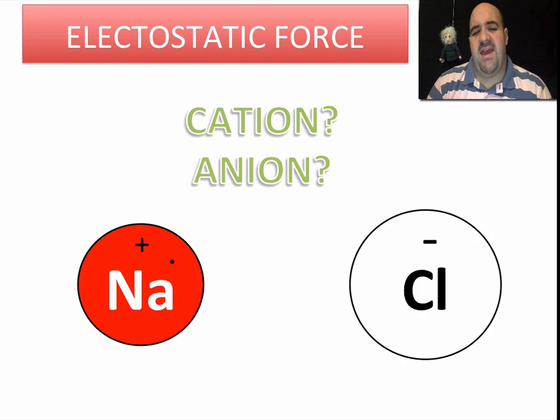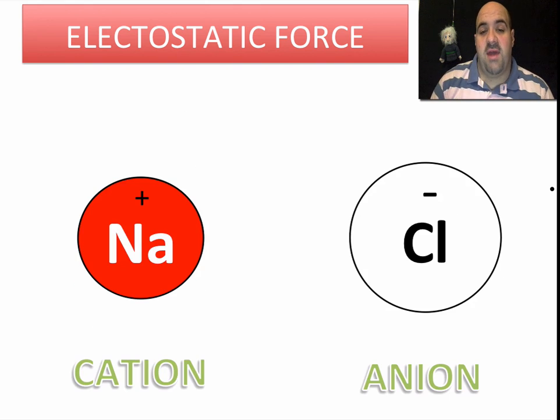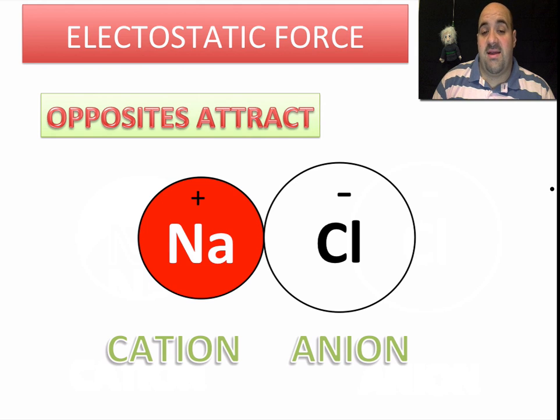So here we have NaCl. And of course, hopefully you know this as table salt. Once they combine together, we have a positively charged cation, sodium, a negatively charged anion, the chloride ion. And what they're going to do, opposites are going to attract. They're going to come together. We have a cation and anion, and they click together. This is an ionic bond. And what we have here is an ionic compound, also known as table salt.